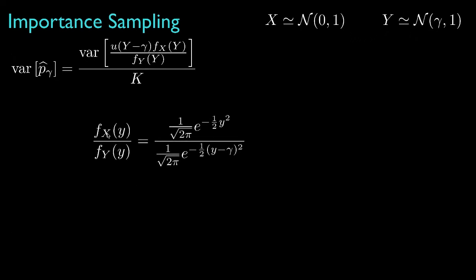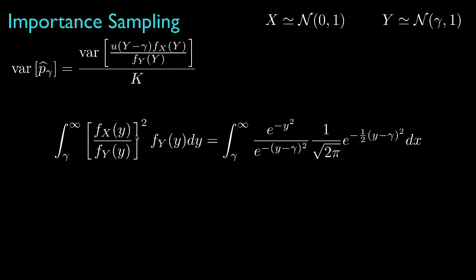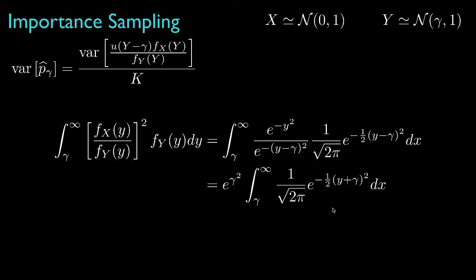Starting with the ratio of f sub x to f sub y, we cancel common terms and square the ratio. We then use an auxiliary density — also a normal distribution with unit variance and mean equal to the threshold — and integrate from gamma to infinity to account for the unit step function. Grouping terms inside the integral yields e to the gamma squared times the right tail probability for a unit variance Gaussian with mean equal to negative gamma, expressible as a complementary error function multiplied by e to the gamma squared. Because this is the second moment for the ratio, and the first moment equals the true tail probability, the variance for this ratio follows directly.